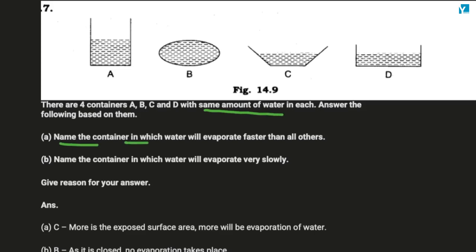Name the container in which water will evaporate faster than all others. In comparison, where will it quickly evaporate? It is C because the water is very exposed to the atmosphere. So the surface of the water is the most exposed, there is more evaporation.